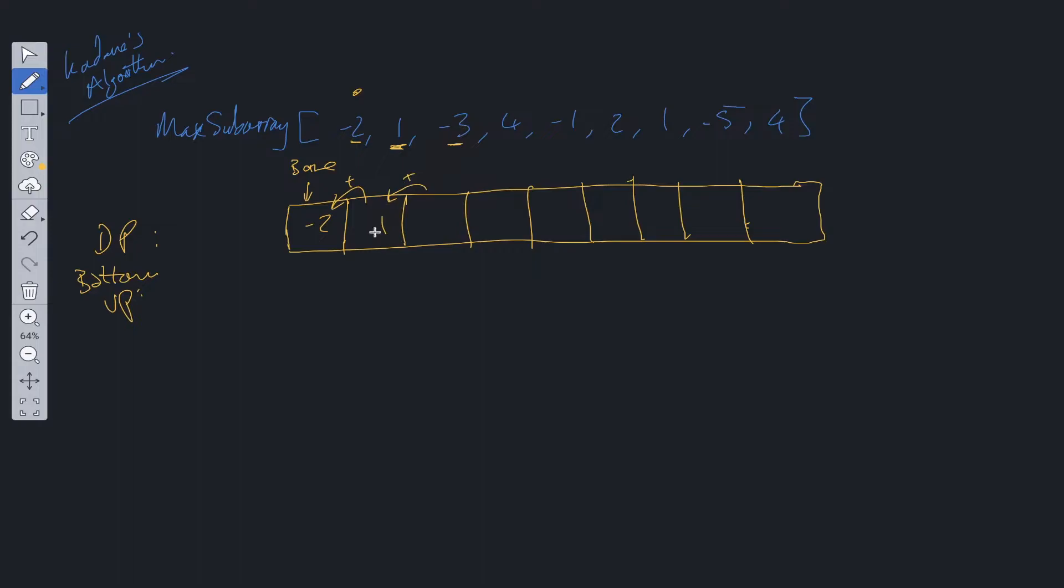We have minus 3. We can take the previous value in this DP array plus minus 3, which is going to be minus 2, or we can take minus 3 itself. So we're going to take the largest, which is minus 2. So as you can see, we are creating some kind of formula here and this is called the optimal substructure.